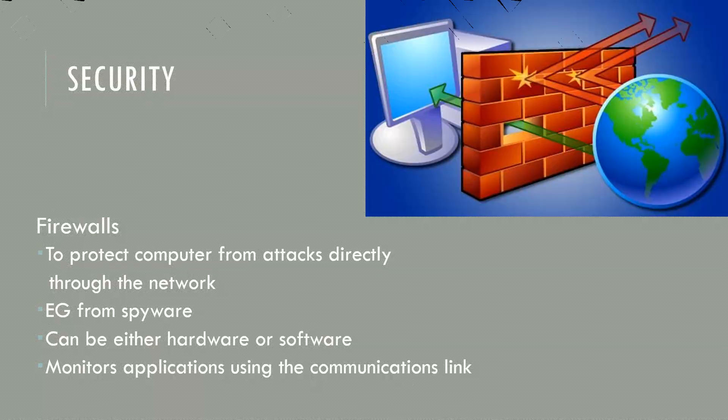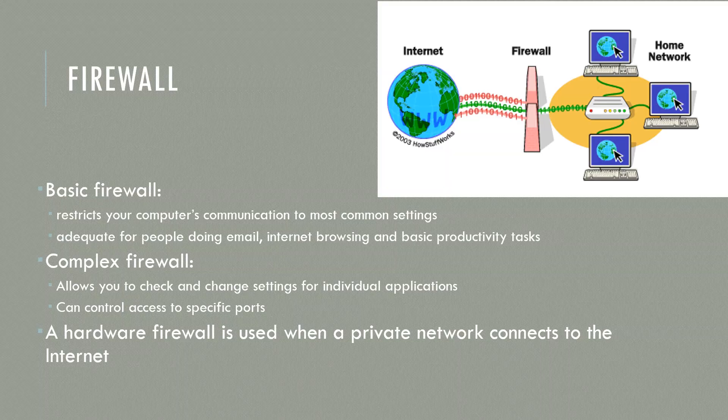A basic firewall will restrict your computer's communication to the most common settings, and it's adequate if you're just doing email, internet browsing, and basic productivity tasks. But if you are a business person, you need a more complex firewall. This allows you to check and change settings for individual applications, so different applications can have different security settings. It also allows you to control specific ports on your computer. A hardware firewall is used when a private network connects to the internet, and for bigger business networks they often have a whole dedicated computer that serves as a firewall.